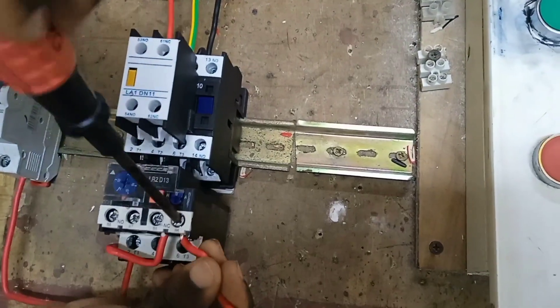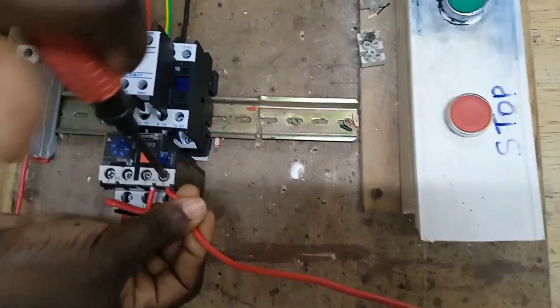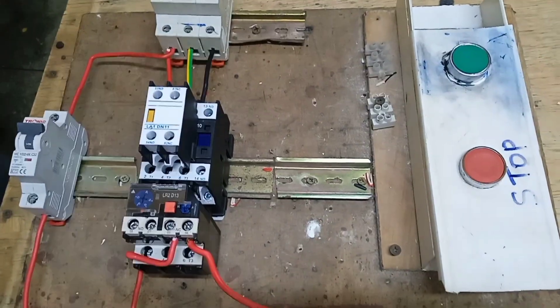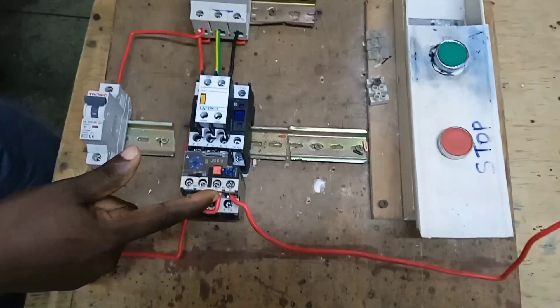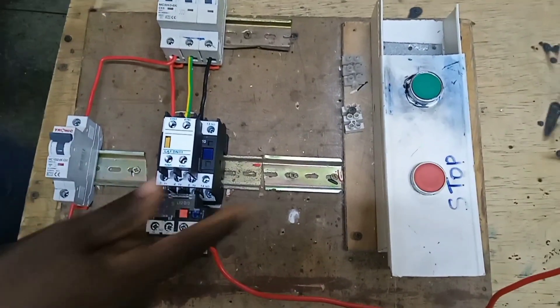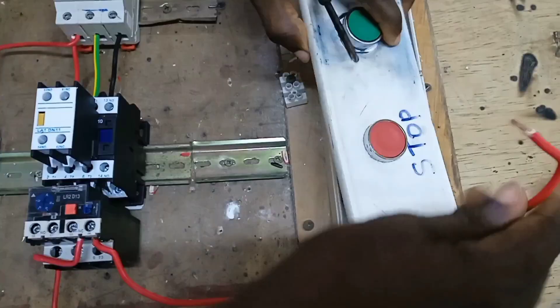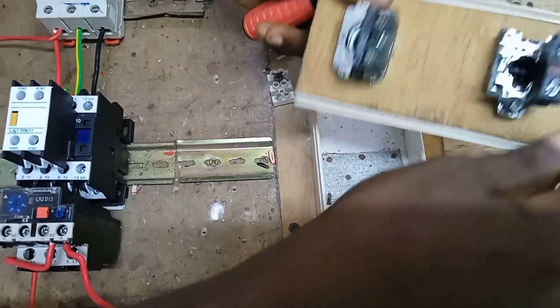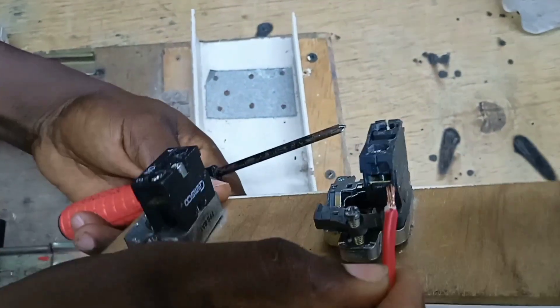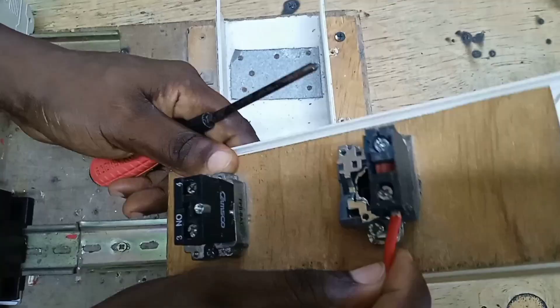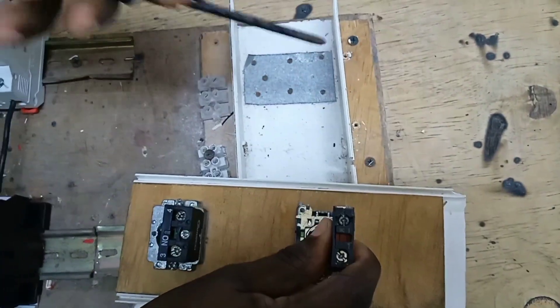We connect this cable to terminal 96 of the overload relay. After connecting the cable to terminal 96 of the overload relay, we connect it to the input of the stop push button, which is a normally closed contact, a normally closed switch. We connect it to the input of the stop push button here.